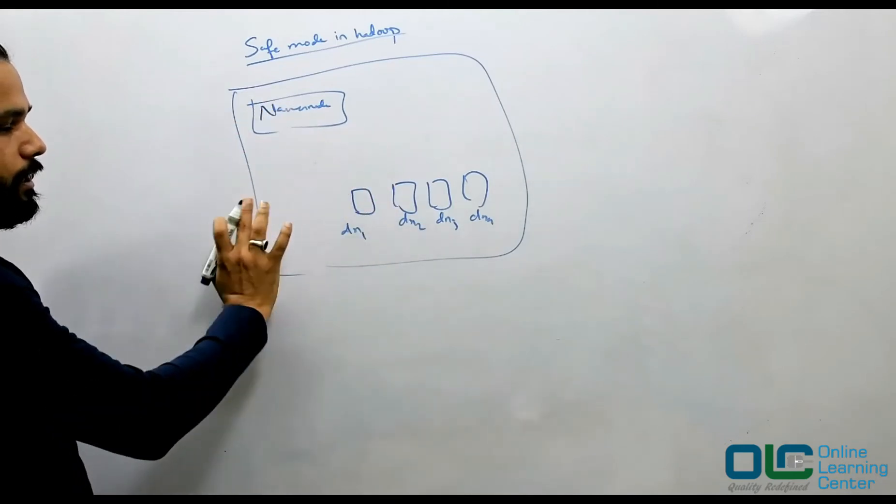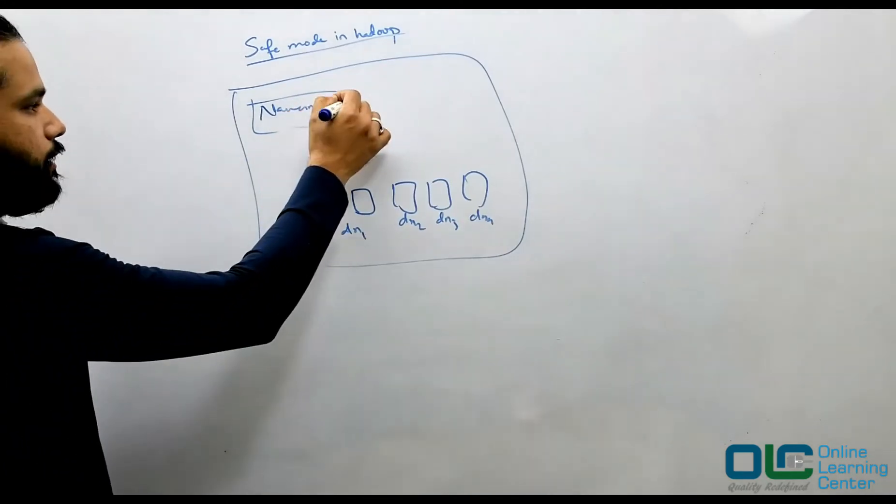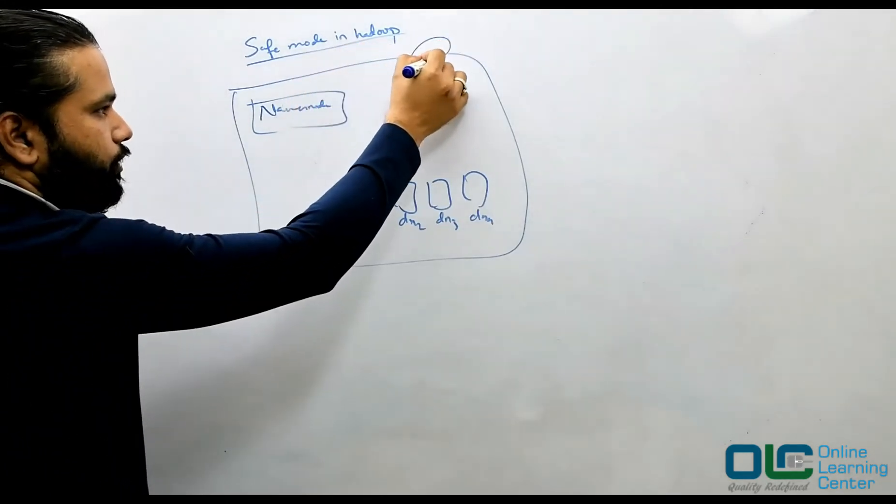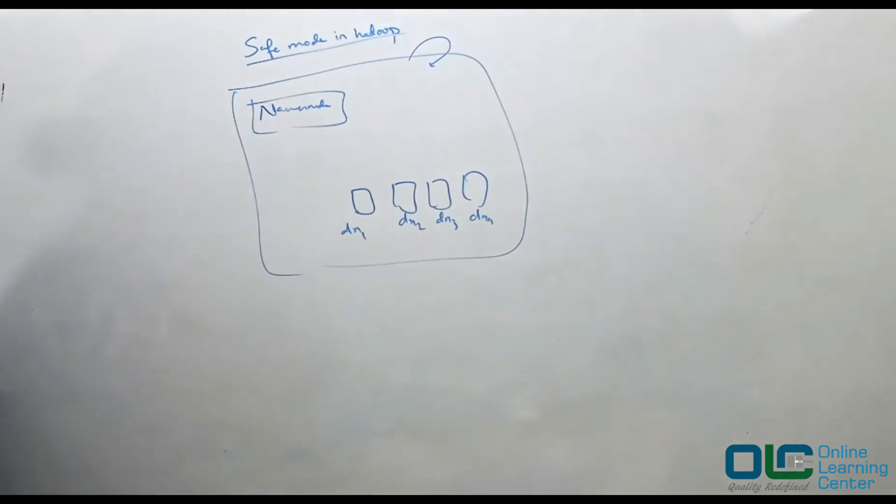And once it gets all the information from the data node, which are the data nodes which are live or dead and so on, after that, your Hadoop leaves the safe mode automatically. And that is what basically happens by default.